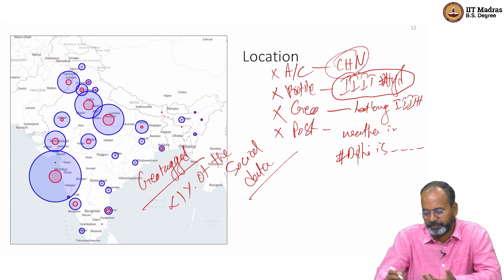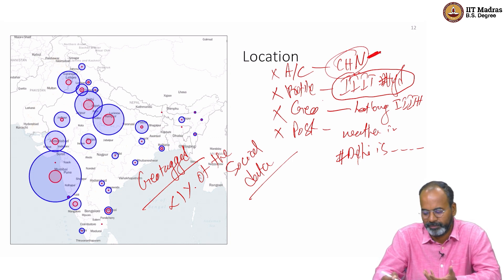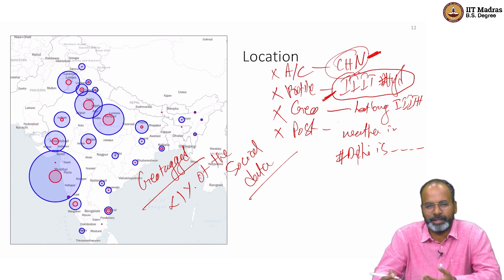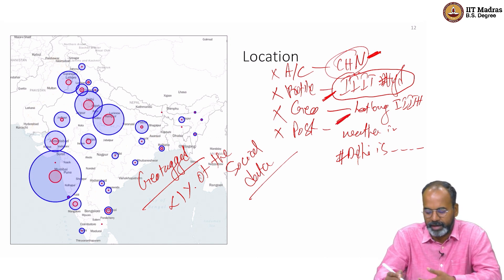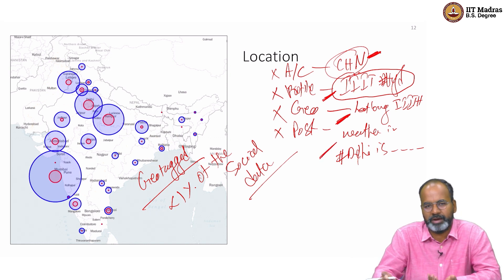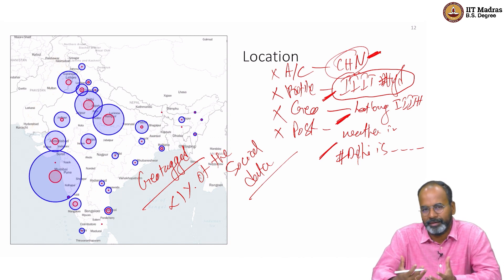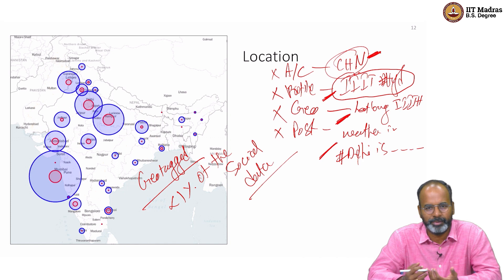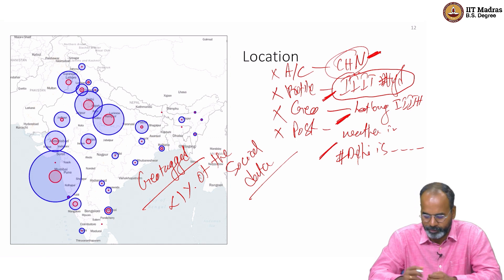Account is probably the least useful because you could create an account from somewhere and use it from somewhere else. Profile is more accurate, assuming people update their profiles. Geotagged is very accurate. Post content may or may not be accurate — you could be in Chennai and talk about weather in Delhi. So location can be collected in four different ways with varying levels of accuracy.